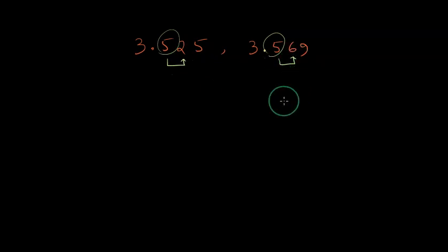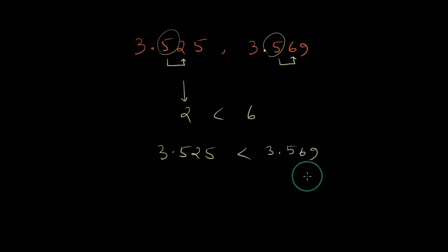What if the immediately next number is also the same? For example 3.525 and 3.569. Now the immediate next number after the decimal point is also equal so you compare the next digit on the right. Here 2 is less than 6, so 3.525 is less than 3.569. This is how we compare decimal numbers.